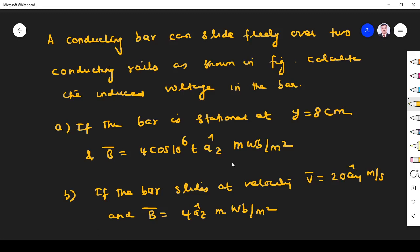Hi students, welcome to the problem solving session on transformer and motional EMF. The problem given here is a conducting bar that can slide freely over two conducting rails as shown in the figure. I will draw the figure now.